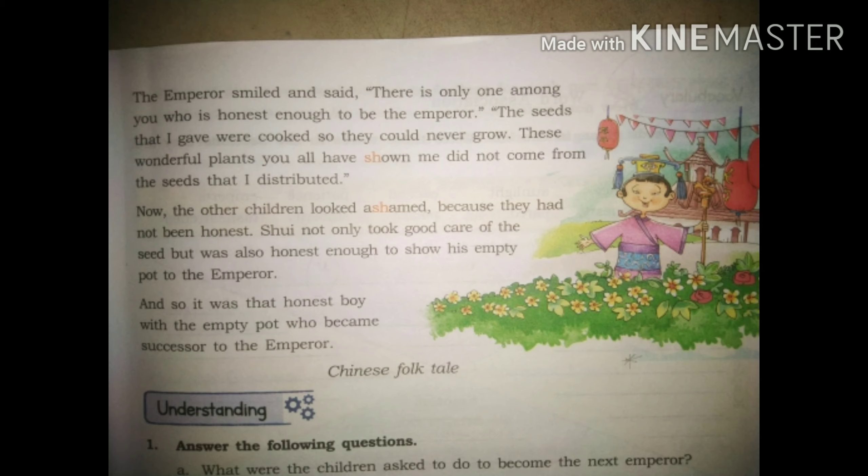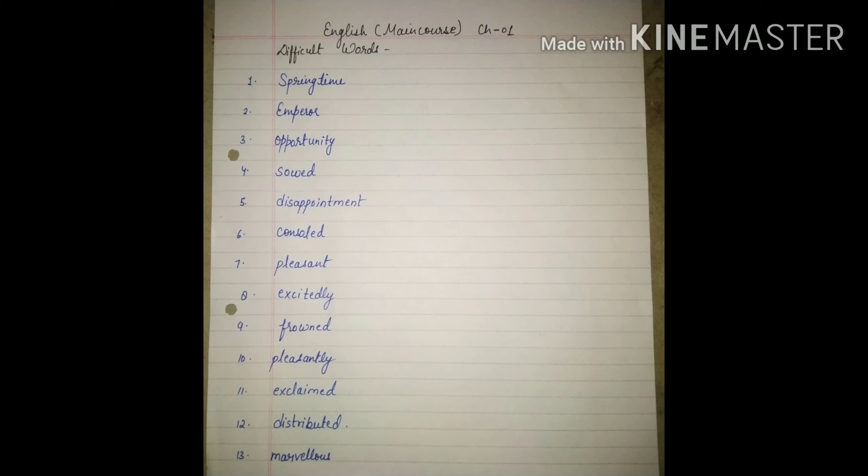So my children, this was the first chapter of your English main course book. I hope you understood the story of the boy Shui. Do the silent reading of the story at home. Now for copy work: write the chapter name 'Empty Pot,' chapter number one, and the heading 'Difficult Words.' Write all these difficult words in your notebook neatly and correctly, and learn the spellings. The words are: springtime, emperor, opportunity, sword, disappointment, consoled, pleasant, excited, excitedly, frowned, pleasantly, exclaimed, distributed, and marvelous.